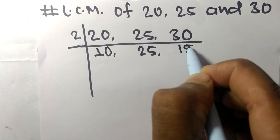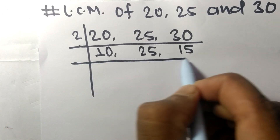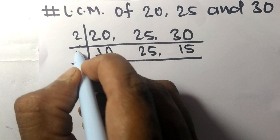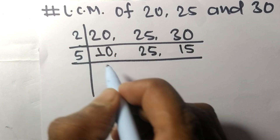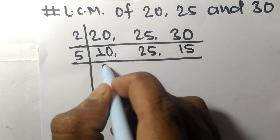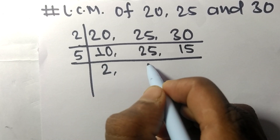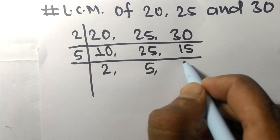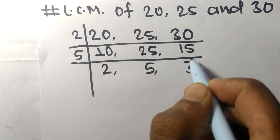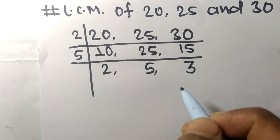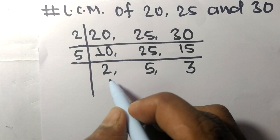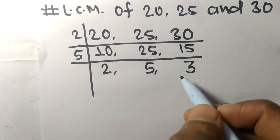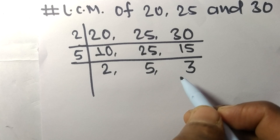Now all the resulting numbers are divisible by 5, so 5 times 2 means 10, 5 times 5 means 25, and 5 times 3 means 15. The remaining numbers 2, 5, and 3 are not divisible by any common number.